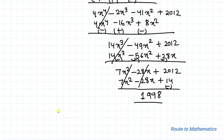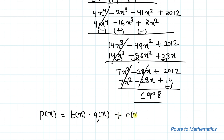From the division theorem we know that p(x) = t(x) × q(x) + r(x), where q(x) is the quotient and r(x) is the remainder.